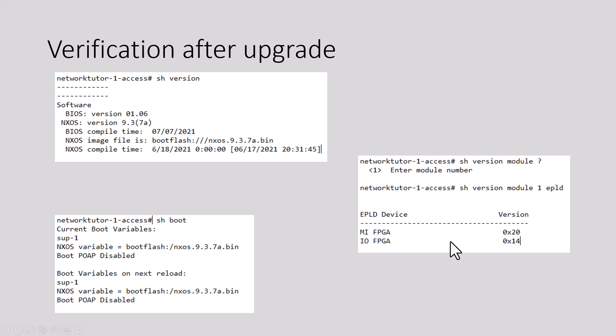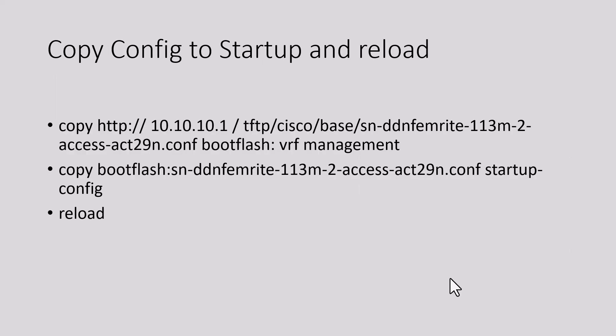Once you have verified everything looks fine, you are done with your code upgrade. If you have the configuration stored in your TFTP server, you can download the configuration file into your management VRF, then copy it to your startup configuration and reload the switch. The switch will come up with all the configuration that is needed, since most of the time we are doing the code upgrade for an existing switch and will need to restore the previous configuration.